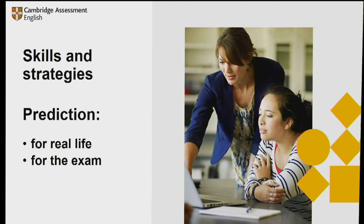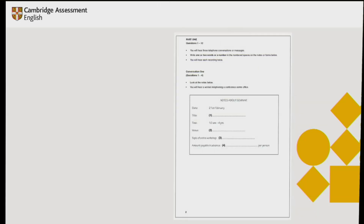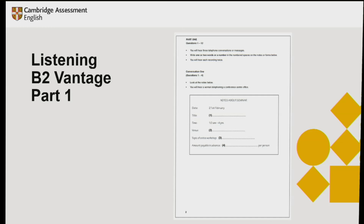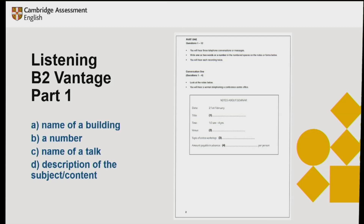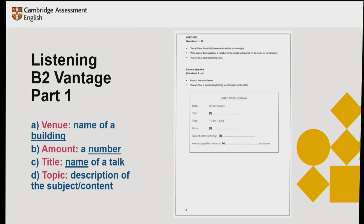Prediction is all about thinking what could come next. In the example I gave you, we had some statements and you had to try and predict which words fitted into the gaps. This is really important for the Business English qualifications. Here we've got an example taken from the listening exam where you need to complete some missing information by listening and filling in the gaps. This is taken from the BEC Vantage exam, which is at B2 level. For these gaps you need to find the name of a building, a number, the name of a talk, and a description of the subject and content.